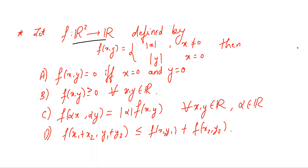Our first statement is: f(x, y) = 0 if and only if x = 0 and y = 0. Note that this implication is easily true: if x = 0 then f(x, y) is mod y, and if y is also 0 then mod y is 0, and hence f(x, y) is 0.